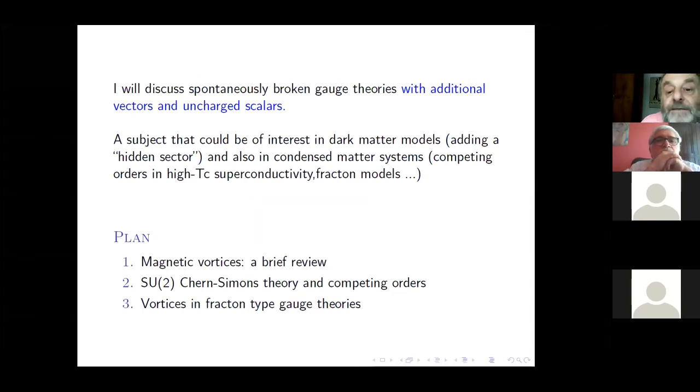So the context is spontaneously broken gauge theories with additional vector and uncharged scalars. This subject could be of interest in dark matter models, adding what is called a hidden sector to describe dark matter, and also in condensed matter physics in competing orders in high Tc superconductivity, fracton models, etc. So I start with a very brief review about magnetic vortices.